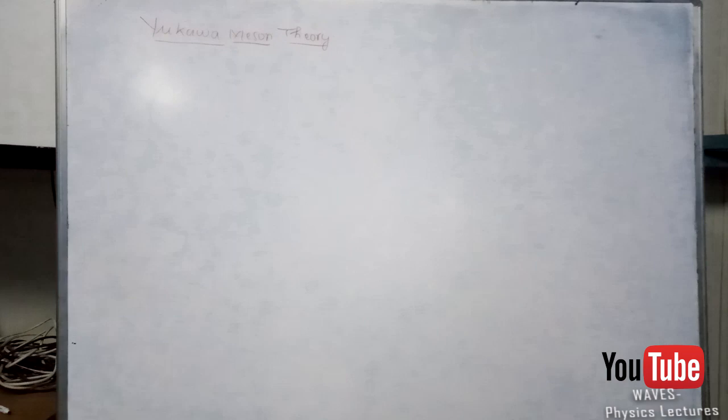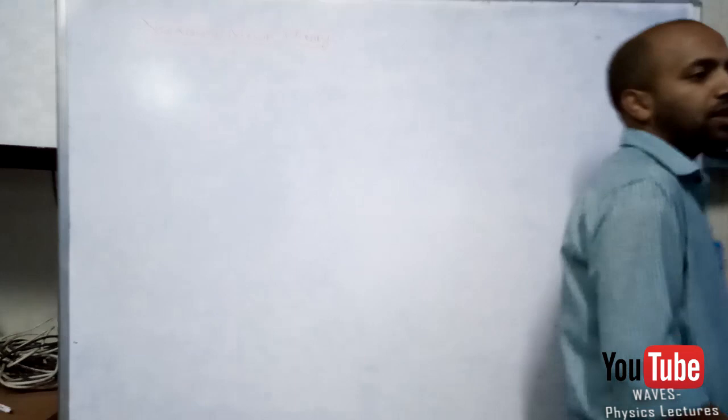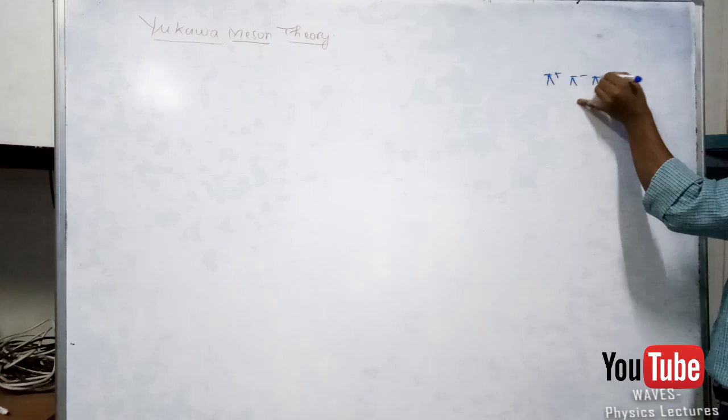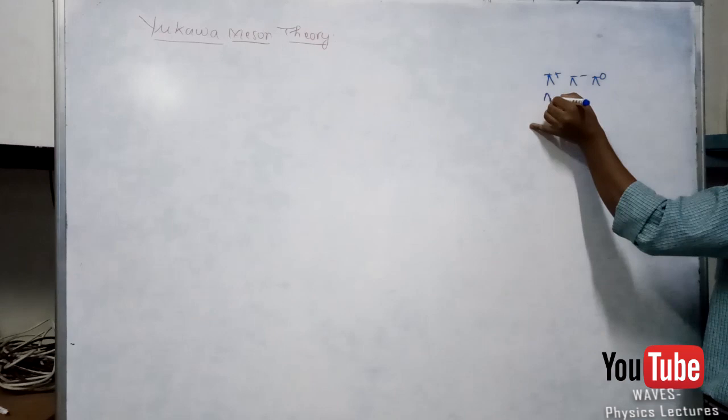Yukawa meson theory usually talks about the nuclear force. Since we studied particle physics, we have a brief idea of what mesons are: pi plus, pi minus, and pi naught. These are the names given to them, and with their charges, we basically call them as pi mesons or pions — a triplet state.